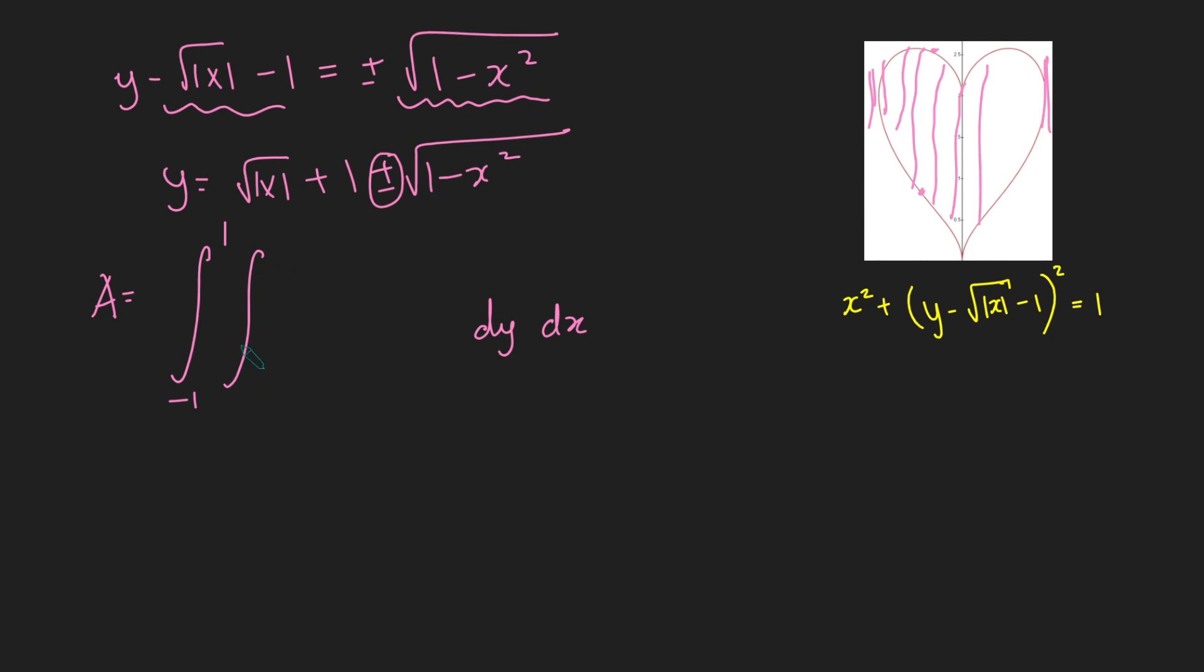How about our limits for the inner integral? Well, it's going to be the two values of y. So we're going to take the minus on the bottom and the plus on the top. So this limit here is going to be the square root of the absolute value of x plus 1 minus the square root of 1 minus x squared. And our top limit here is going to be the square root of the absolute value of x plus 1 plus the square root of 1 minus x squared.